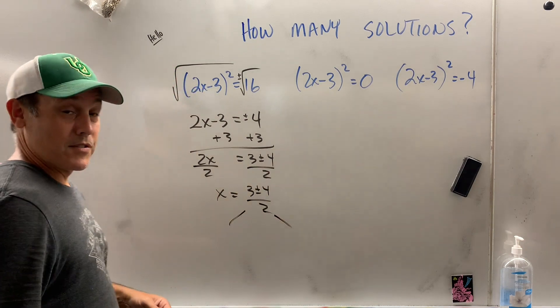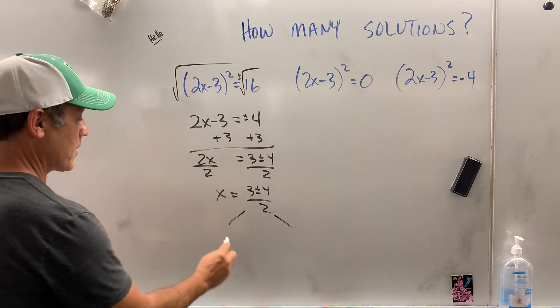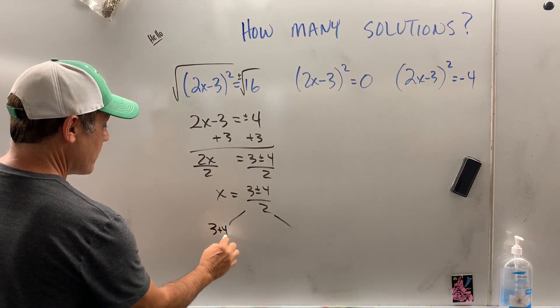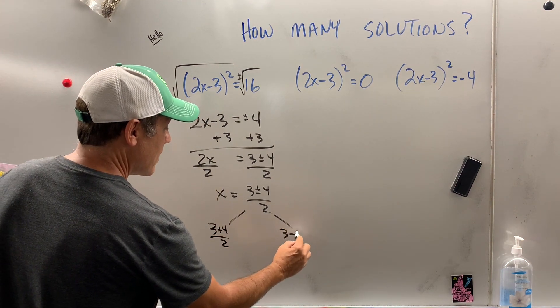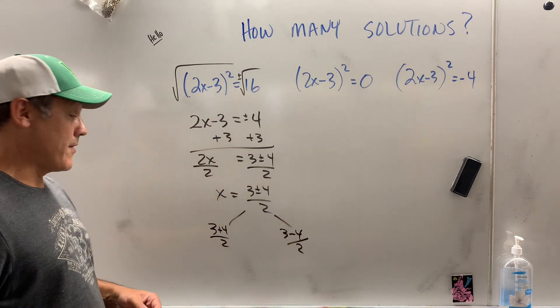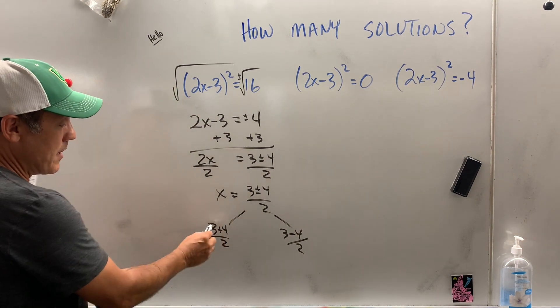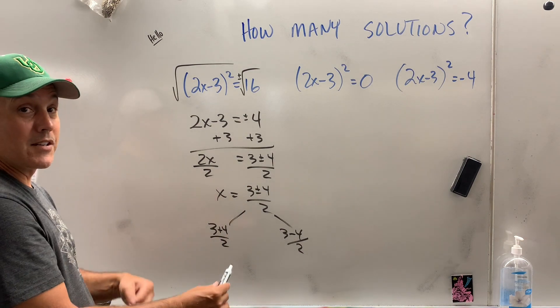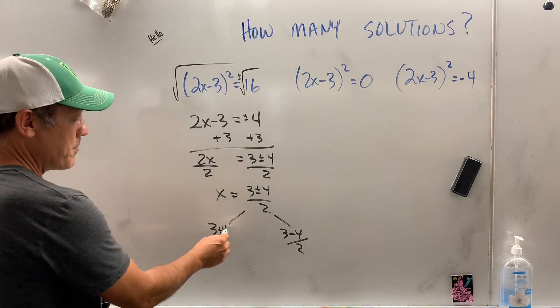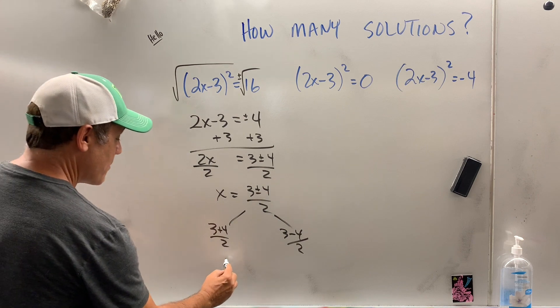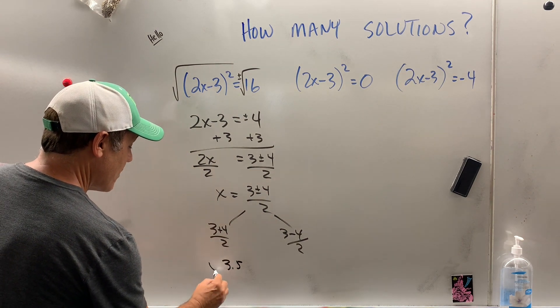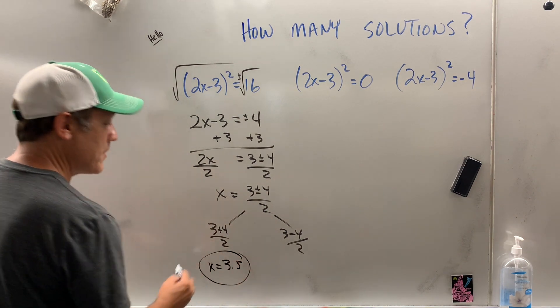Now, we need two answers. So I like breaking it down like this since I have room to work down. 3 plus 4 divided by 2, and 3 minus 4 divided by 2. So what is that? 7 divided by 2. Now, you can't go hit 3 plus 4 divided by 2 on the calculator. It will mess it up. But 3 plus 4 is 7 divided by 2 is 3.5. So x equals 3.5. That's one answer.